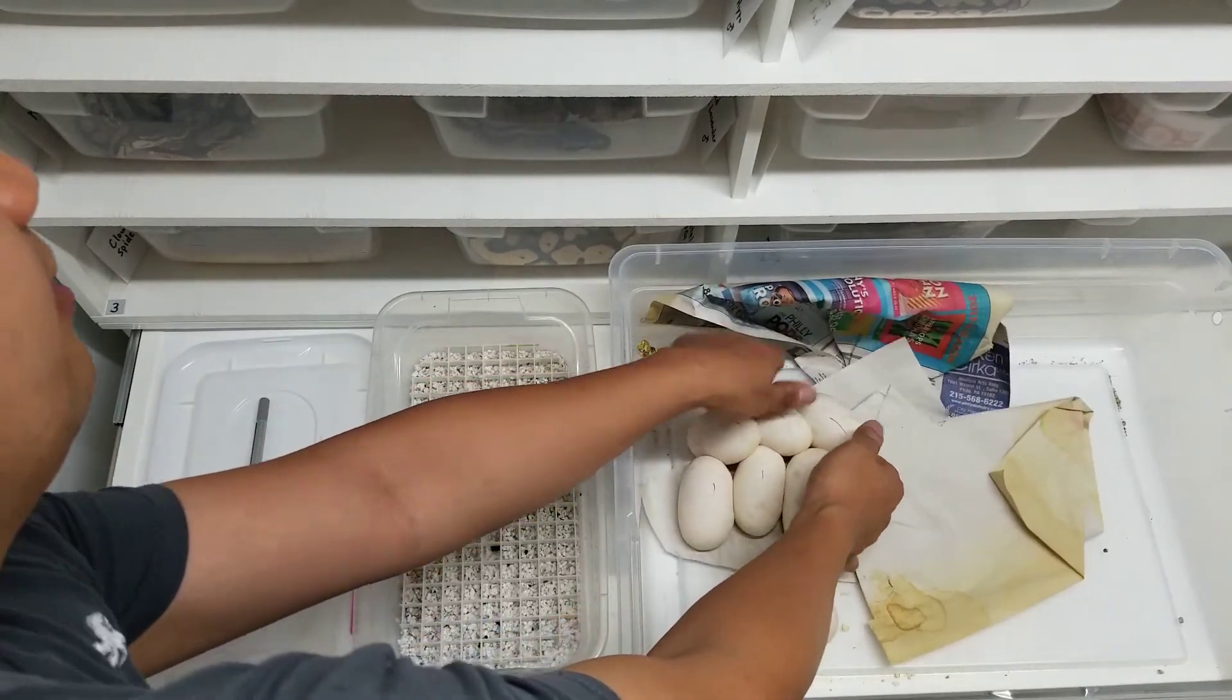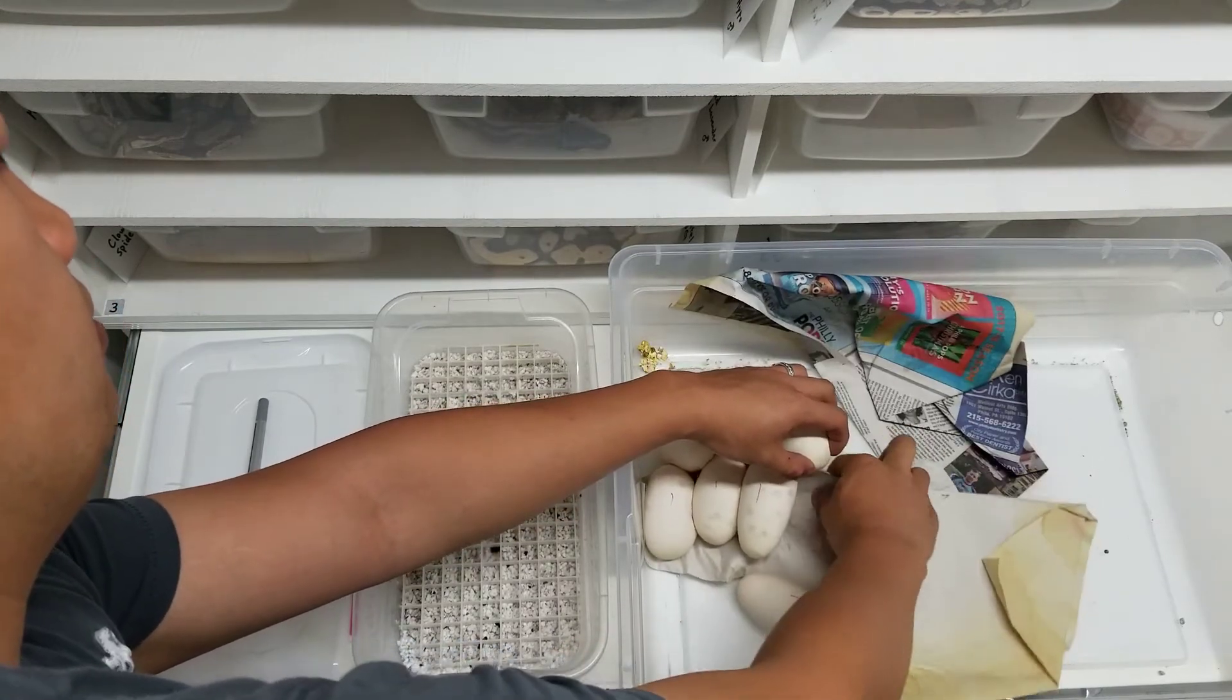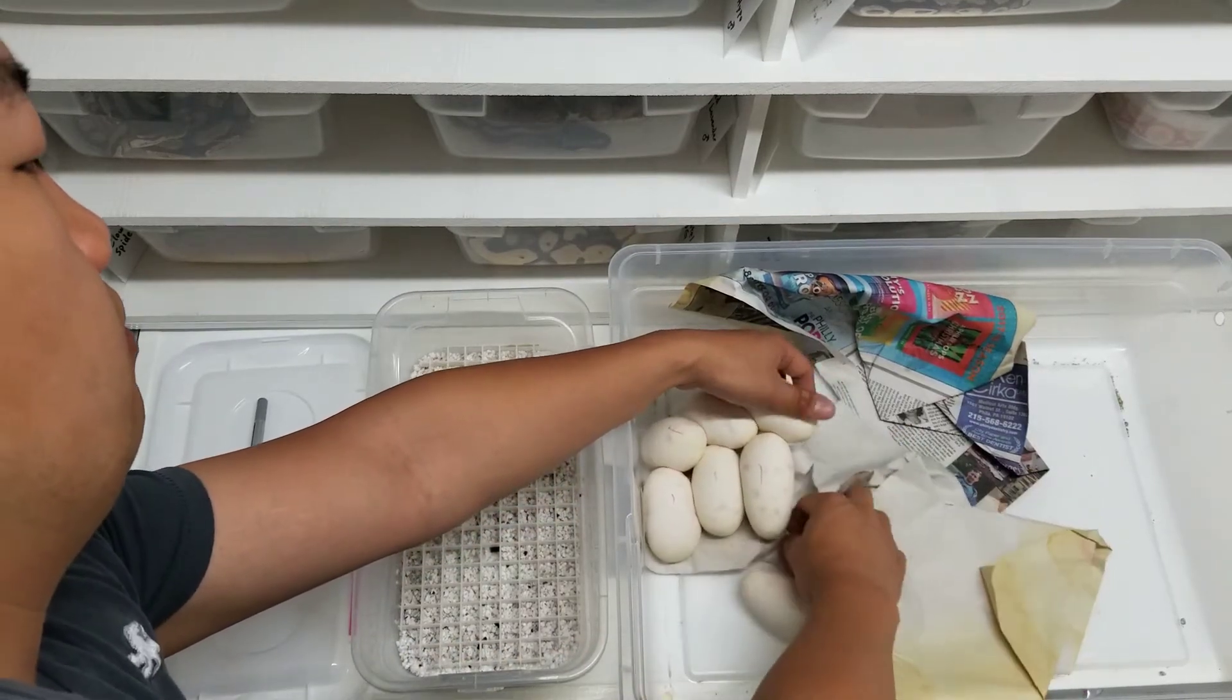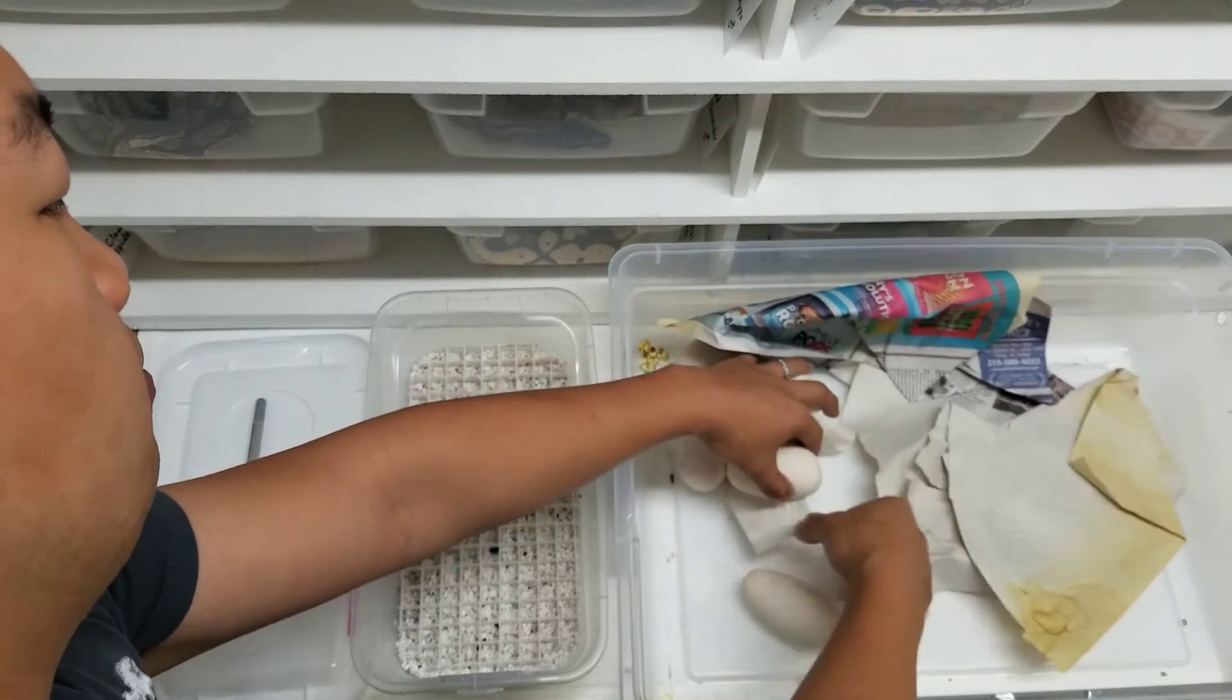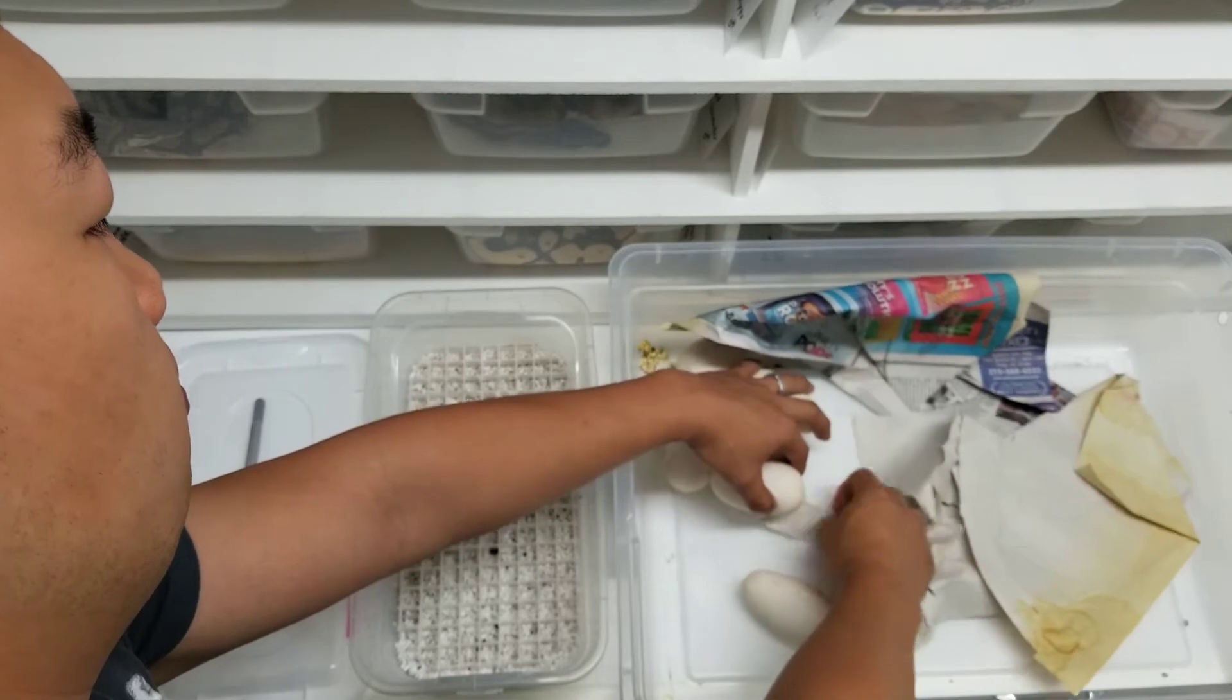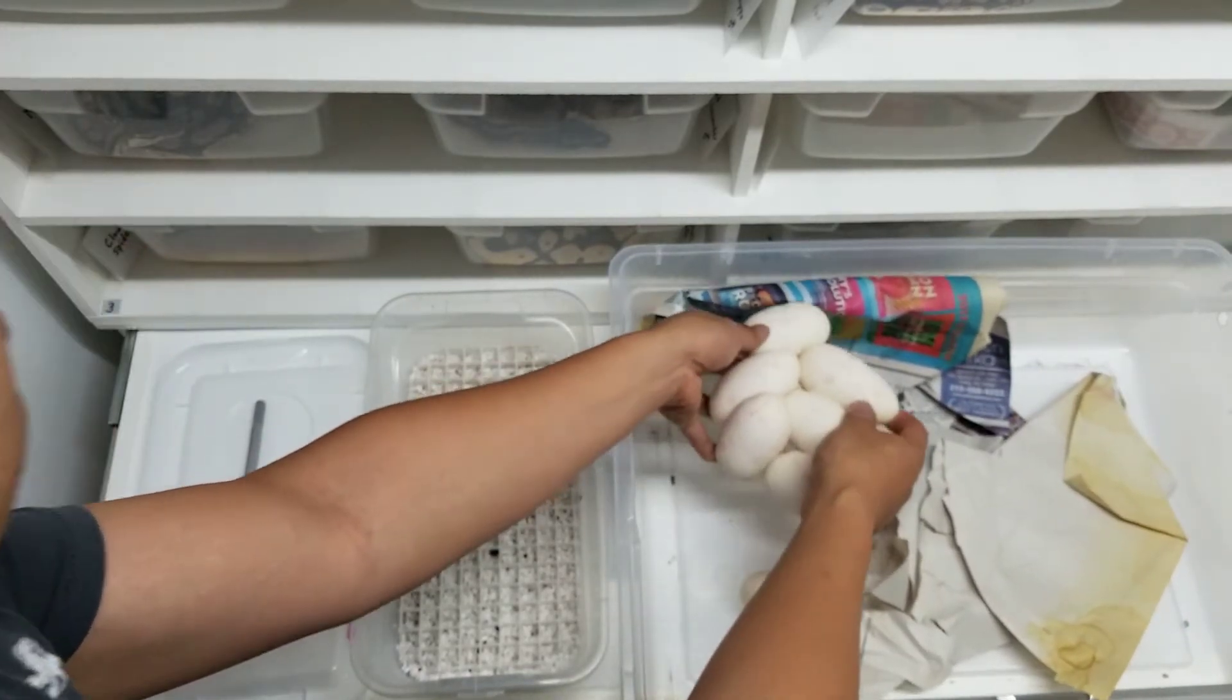And of course they're stuck to the paper. Not a big deal. They don't stick to the paper as much as they do to each other. Not to worry, it just takes a few seconds to peel the paper off the eggs. There, now done. See, wasn't that difficult.